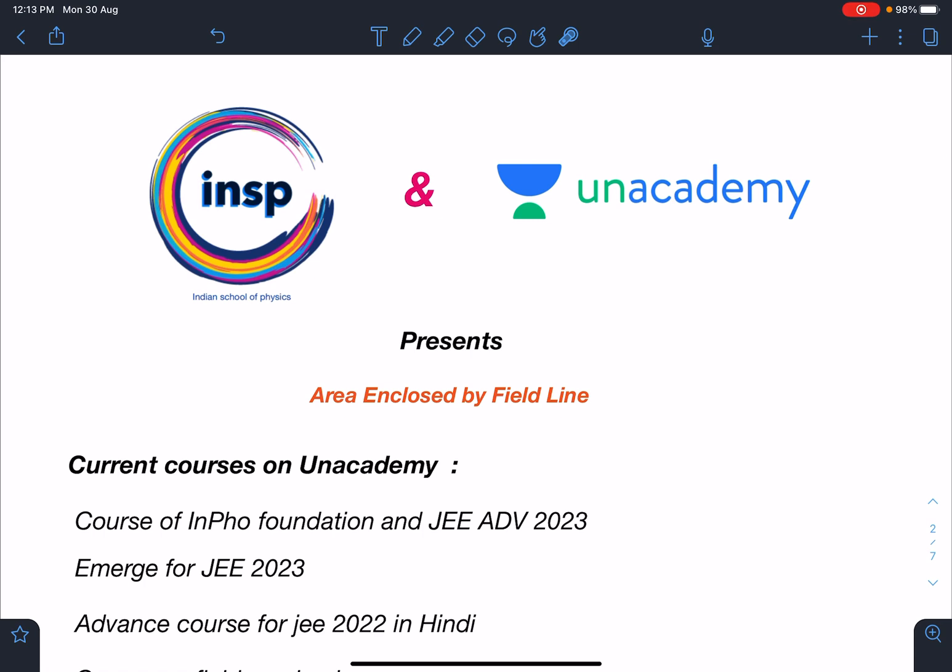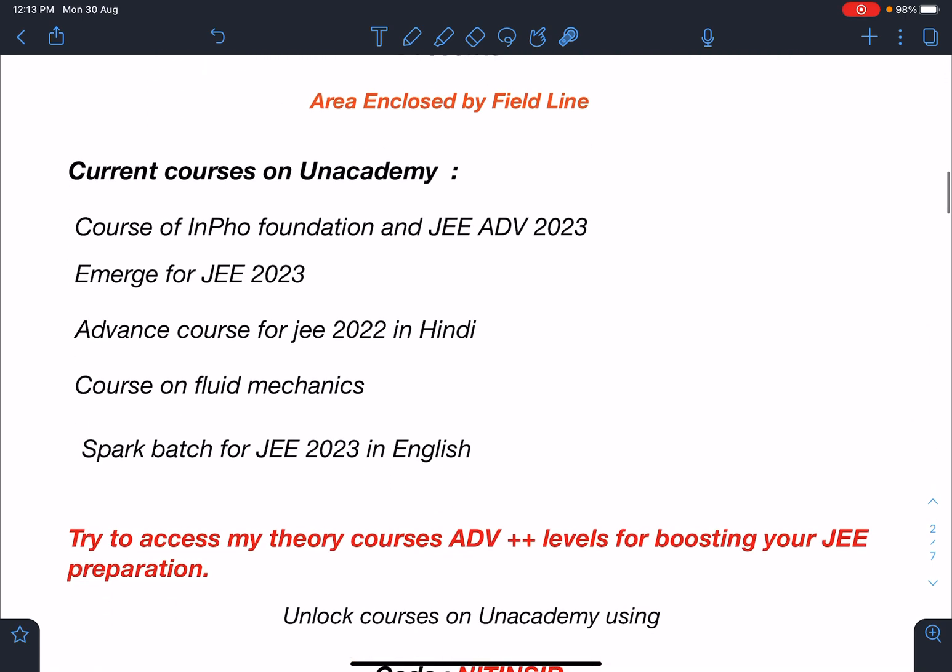The name of this problem is area enclosed by field line. My current courses on Unacademy are: course of NPHO Foundation and Fizarray Advanced 2023 where we have just finished work, power, energy, and center of mass and conservation of momentum will be starting next week. Emerge for JEE 2023 is in Hindi and oriented towards JEE Advanced. Advanced courses for JEE 2022 is going on in Hindi. Currently we are doing magnetism and EMI will be starting. Another course for JEE 2022 is on fluid mechanics where we are doing the revision of 11th.